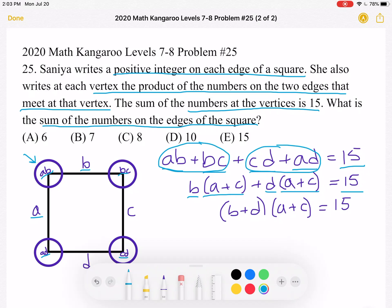And we can rewrite that as being the quantity of B plus D times the quantity of A plus C. And that's equal to 15.